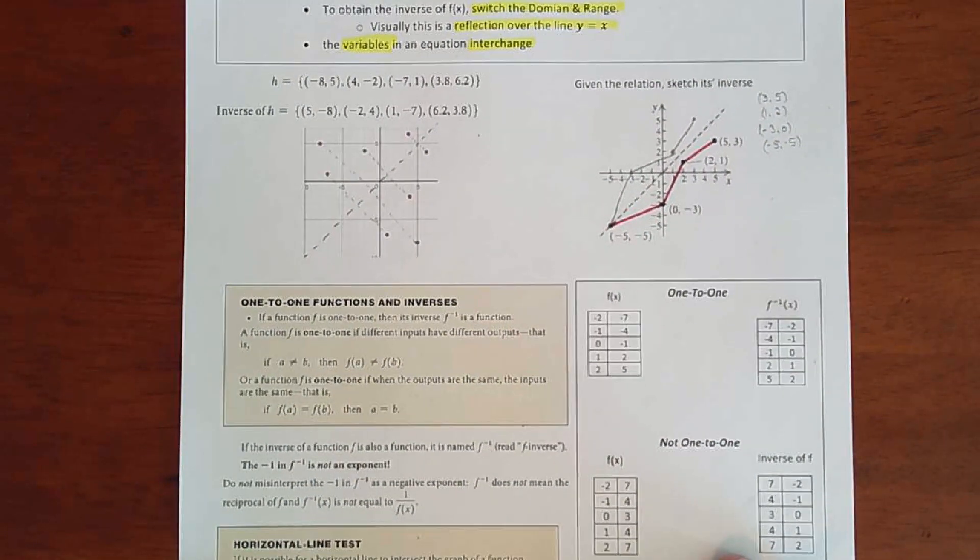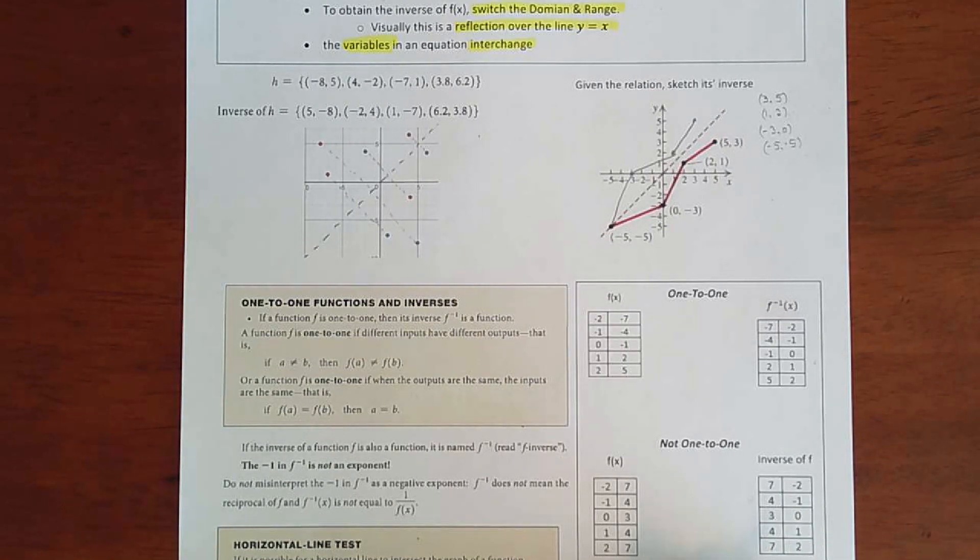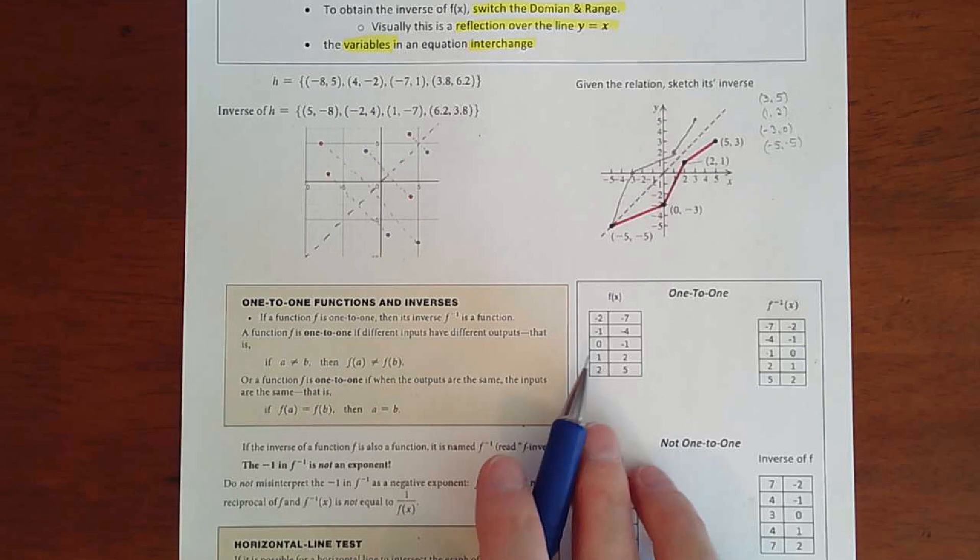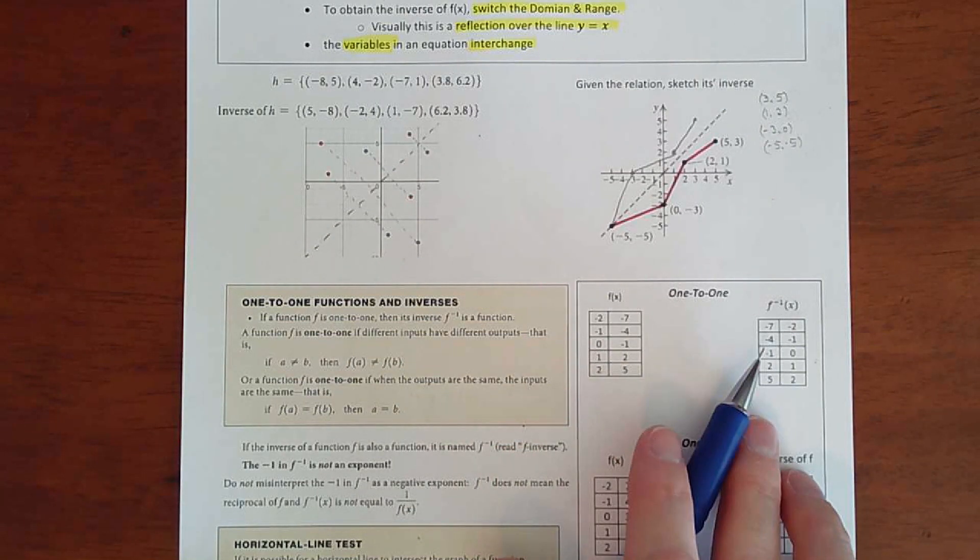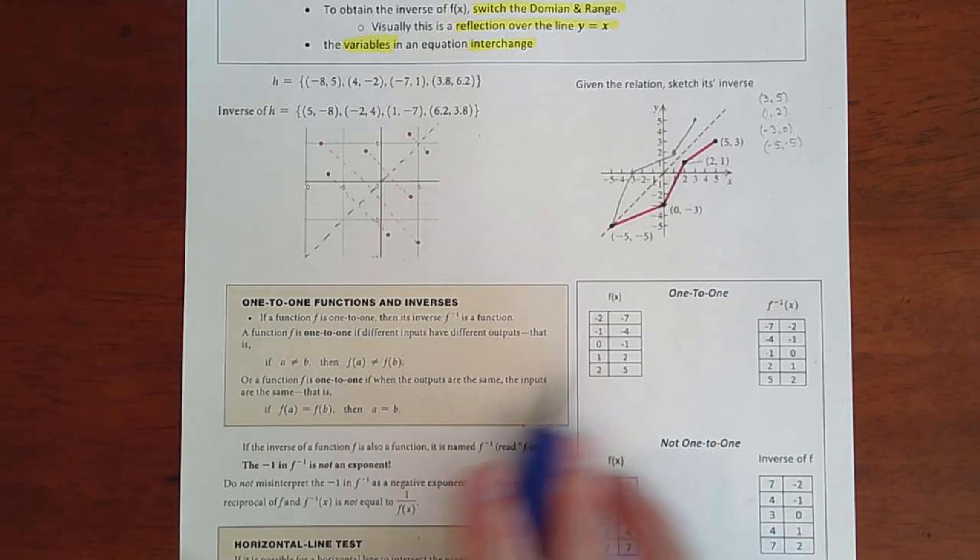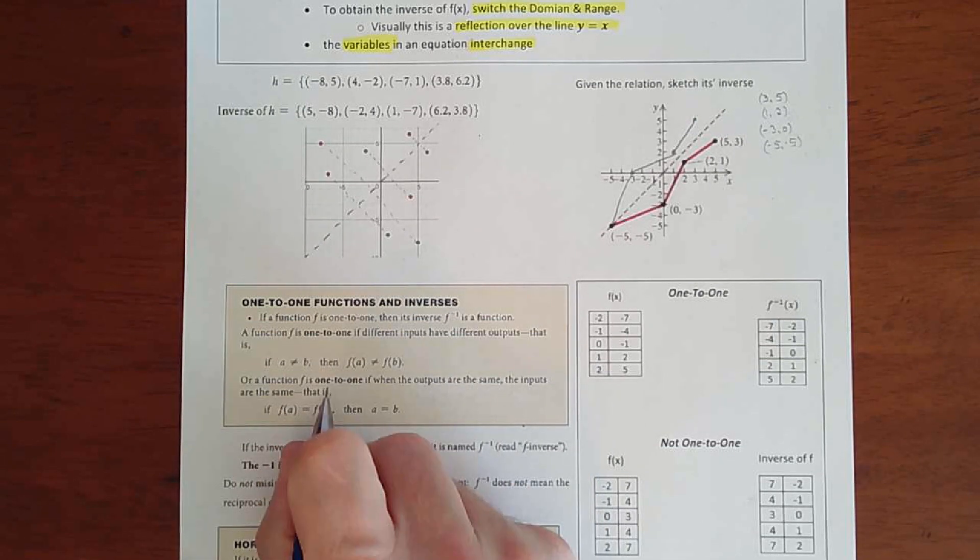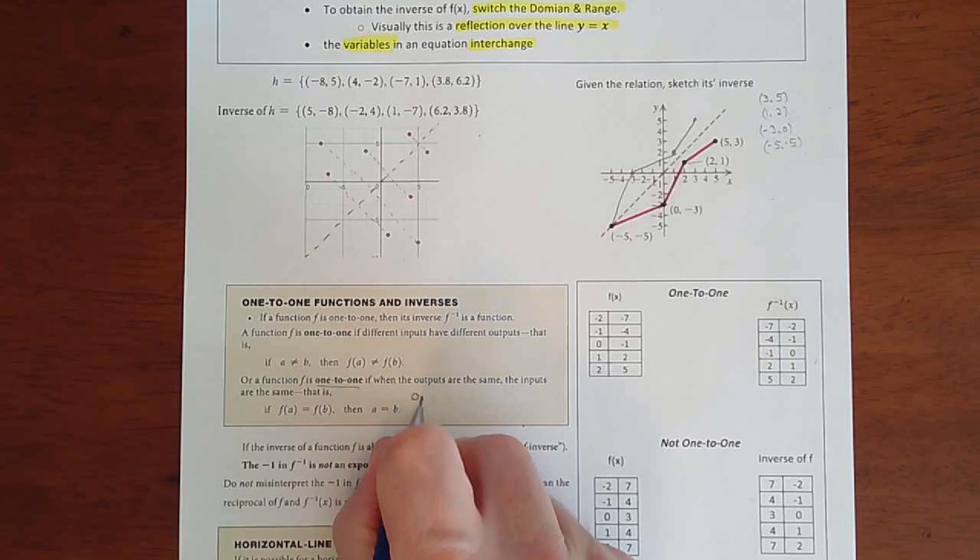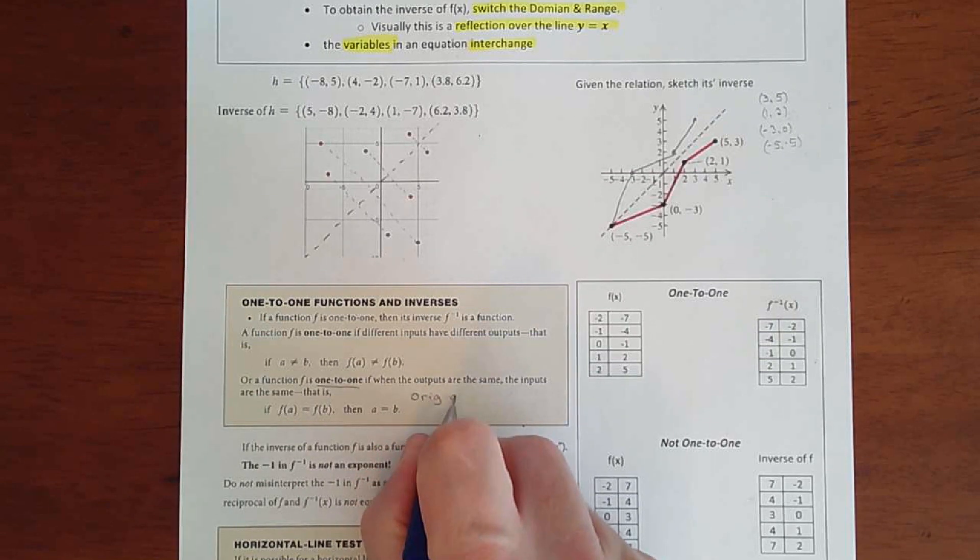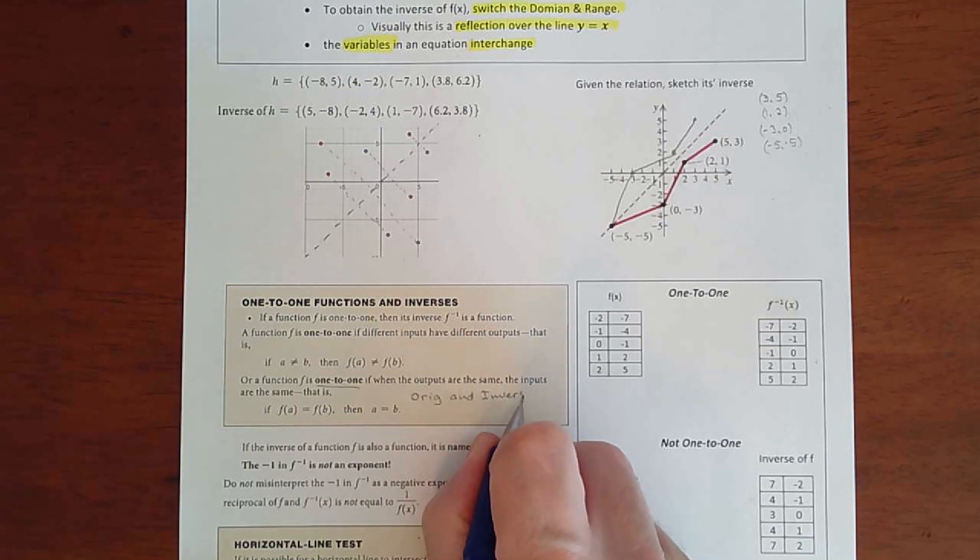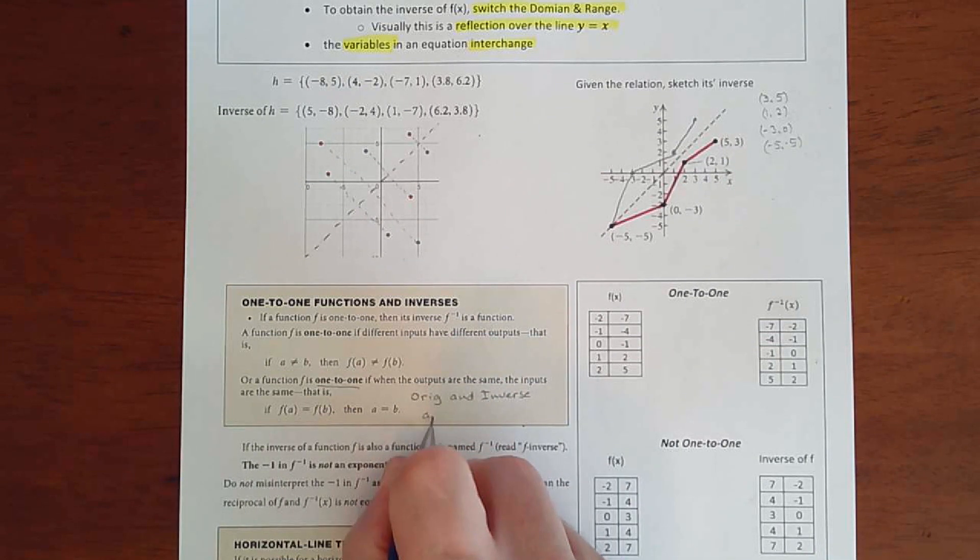Which basically just means that your original is a function and your inverse is a function. Because not all inverses are going to be functions - they won't pass the vertical line test. So a one-to-one just means original and inverse are functions.